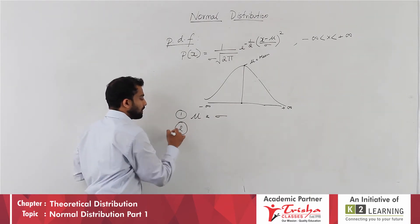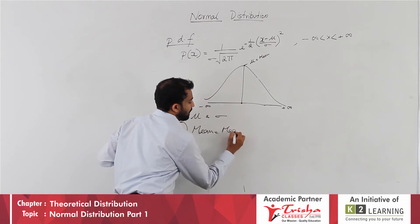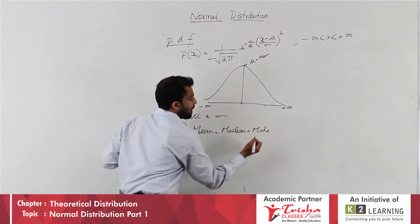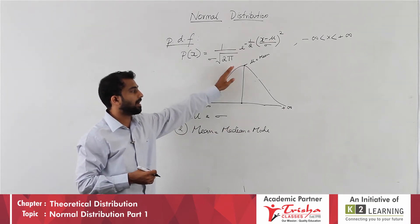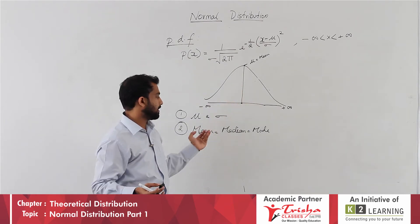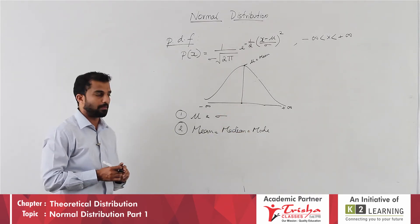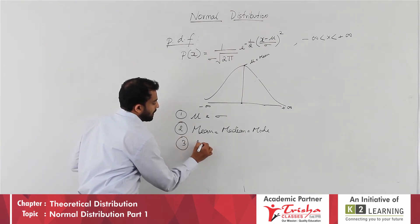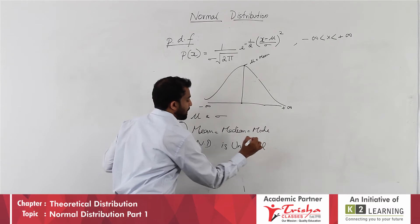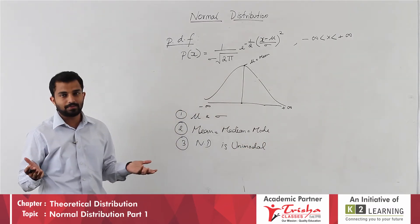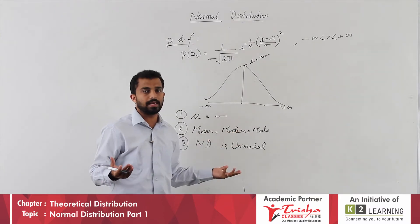In a normal distribution, the mean, median and mode are all equal. For example, if the mean is 25, the median is also 25 and the mode is also 25. Because mean, median, and mode are all equal, normal distribution is unimodal — it has only one mode. Definitely it will be one mode, because if there is only one mean and one median, the mode must be the same.